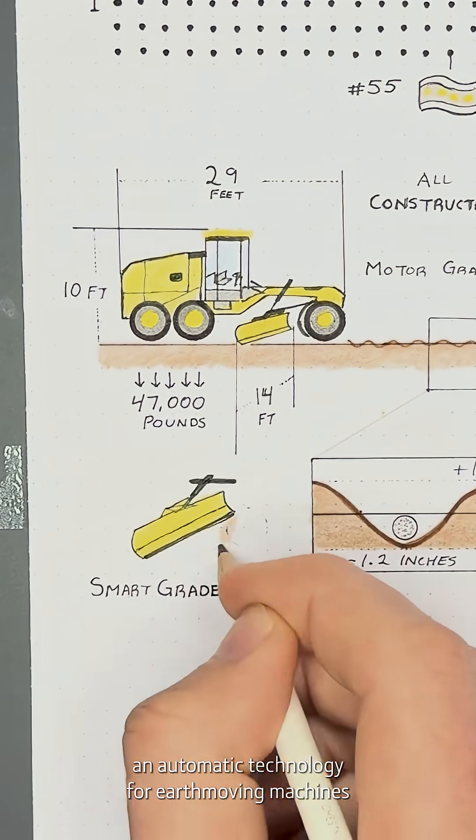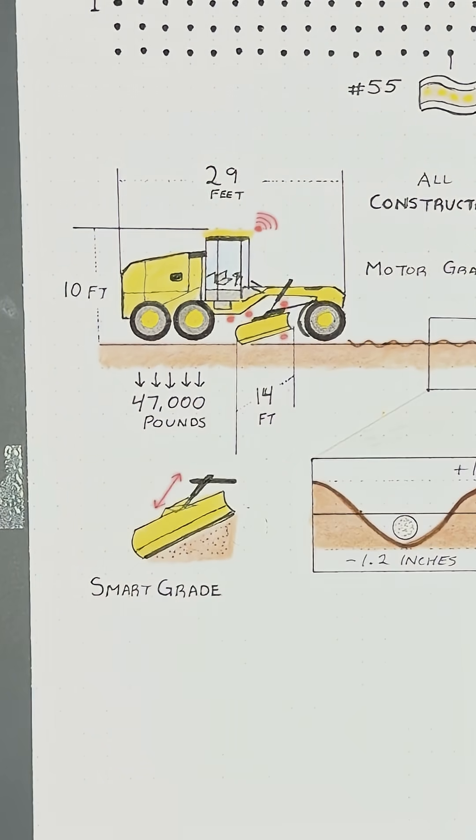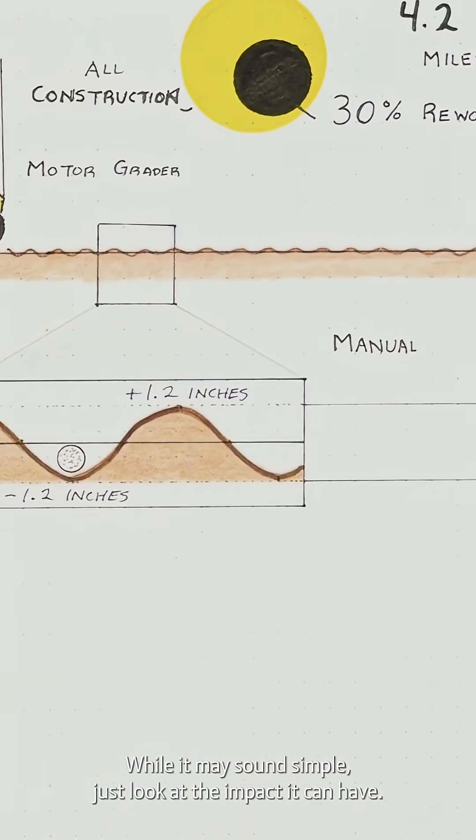SmartGrade is an automatic technology for earth-moving machines that uses a combination of on-machine sensors and GPS to control blade height. While it may sound simple, just look at the impact it can have.